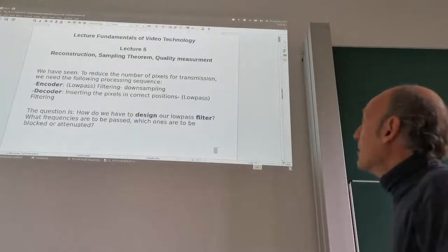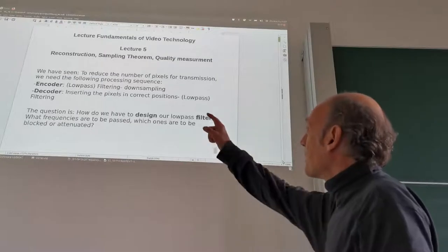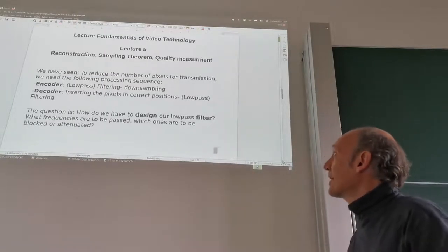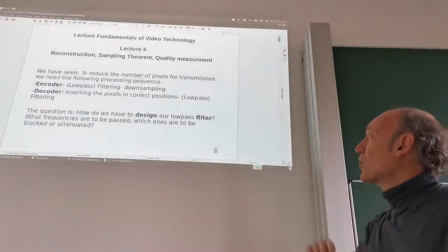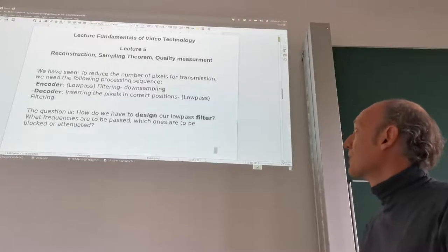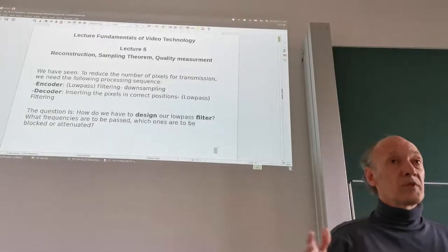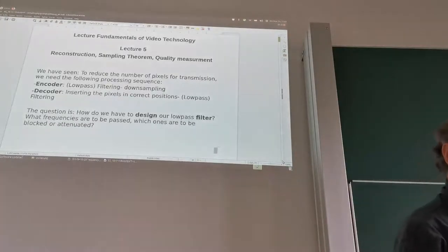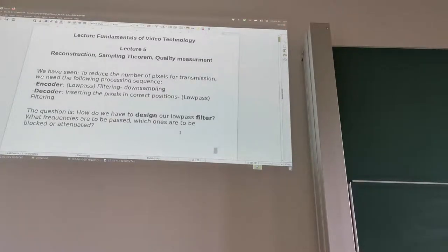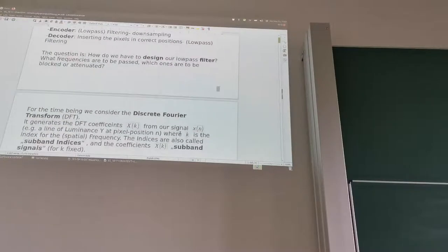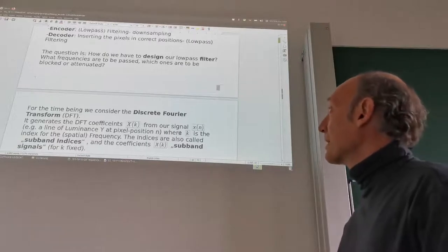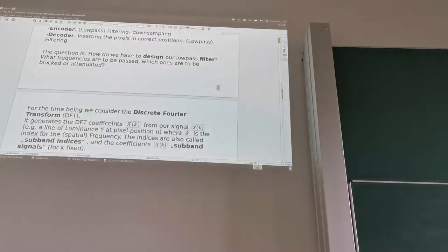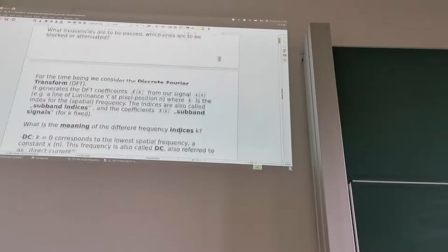In the encoder we have low-pass filtering and downsampling. In the decoder, we have insertion of pixels in the correct positions and then low-pass filtering to obtain the original size. The question is: how do we design our low-pass filters? What frequencies are passed and which ones are to be blocked or attenuated? For that, we can take a look at the Discrete Fourier Transform, the DFT.